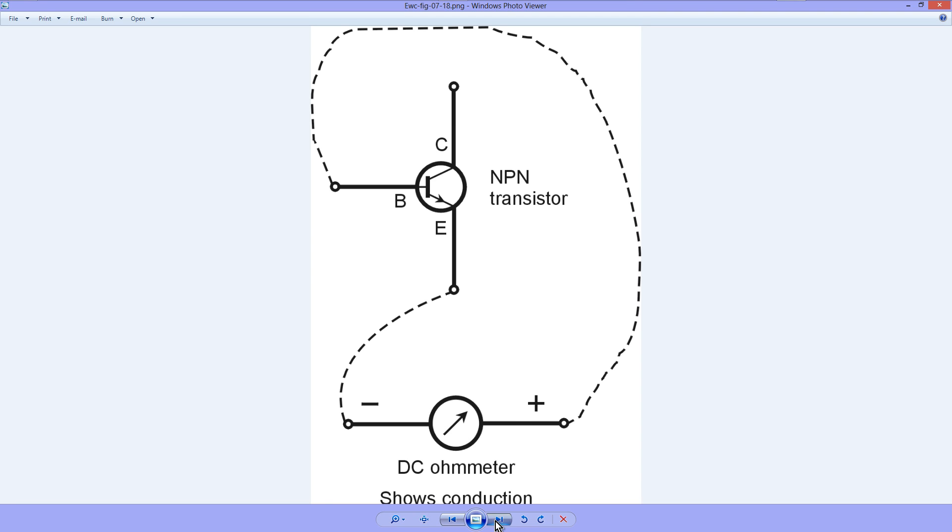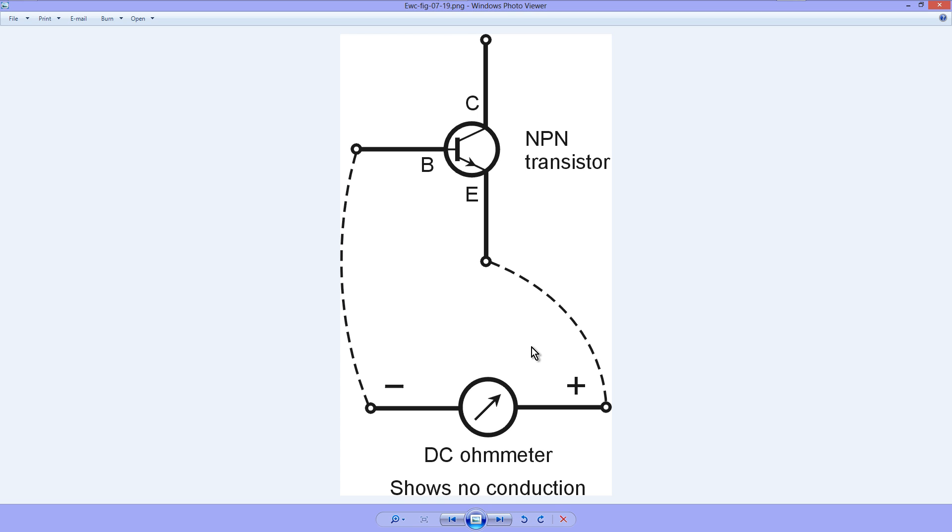If you reverse them though, so that the positive lead of your meter goes to the emitter and the negative to the base, you should not see conduction. Your ohmmeter should show infinity and in fact with my test that is what I got.